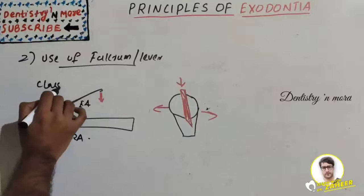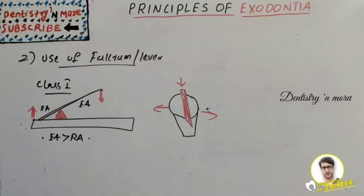Rules of using an elevator: use a palm grip; do not use a neighboring tooth as a fulcrum; do not use the buccal or lingual plate of bone as a fulcrum; use the left hand for reflection, guarding, and supporting; take care of the surrounding vital structures; and always follow the root curvature.